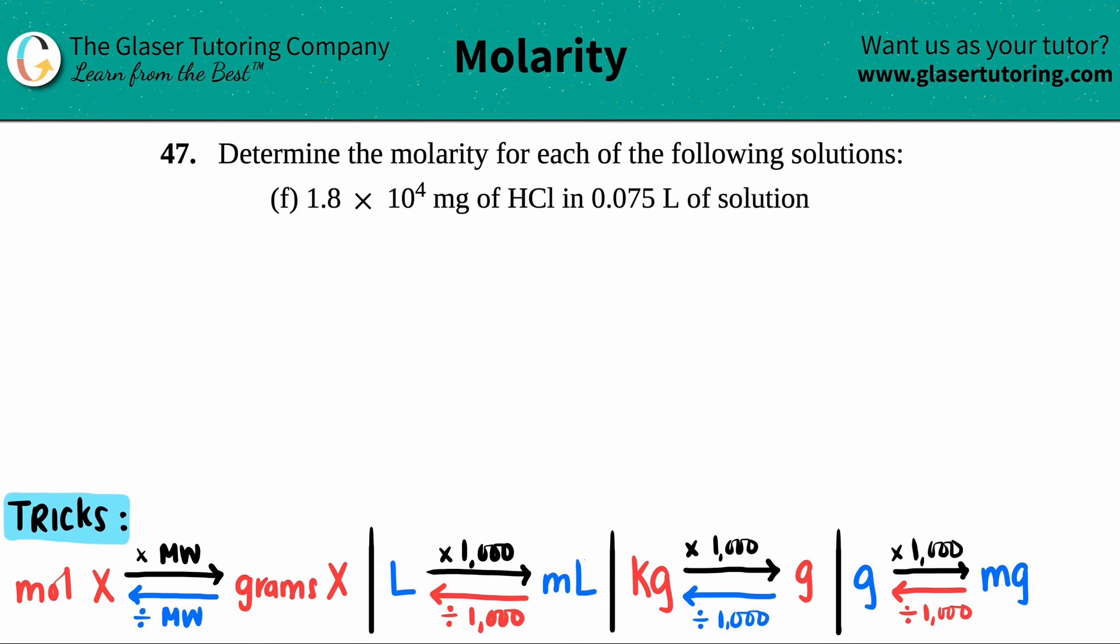Number 47: Determine the molarity for each of the following solutions. In this case we have 1.8 times 10 to the fourth milligrams of HCl which is in 0.075 liter of solution.